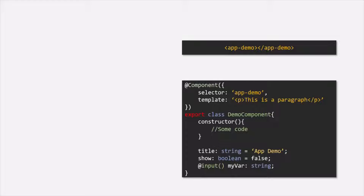So when an Angular application runs and when it finds one of the component selectors, it will instantiate a new version of that component class and render it in the DOM. For example, here we have this demo component class, and for this demo component class, the selector is app-demo. So when we use this selector somewhere in our Angular application, Angular will instantiate this demo component class, and in order to do so, it will call its constructor.